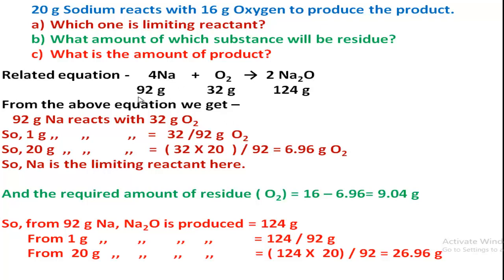From the balanced equation: 4 moles of sodium, that is 4 × 23 = 92 grams of sodium, reacts with 32 grams of oxygen. So 1 gram of sodium reacts with a proportional amount, and 20 grams of sodium reacts with only 6.96 grams of oxygen. The needed amount of oxygen for 20 grams of sodium is only 6.96 grams, but 16 grams is given — so sodium is the limiting reactant.